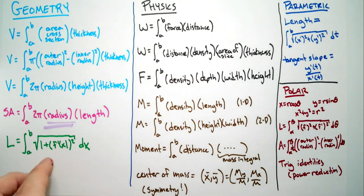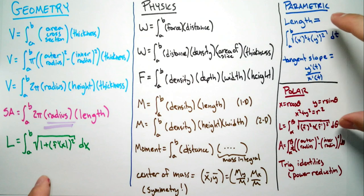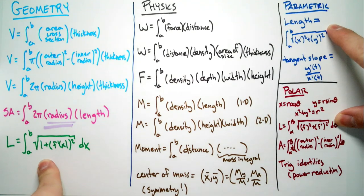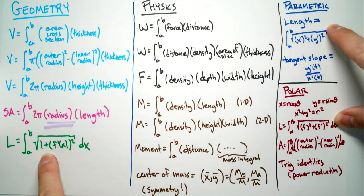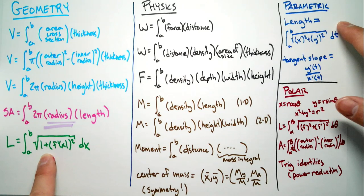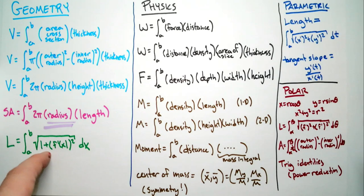For length, there are actually three length formulas, and you should probably know them all. There's the length of a curve y = f(x): the square root of 1 plus f′(x)² dx. There's the parametric length: the square root of x′² plus y′² dt. And then there's the polar length: f² plus f′².